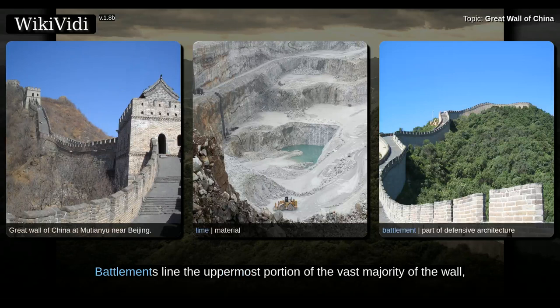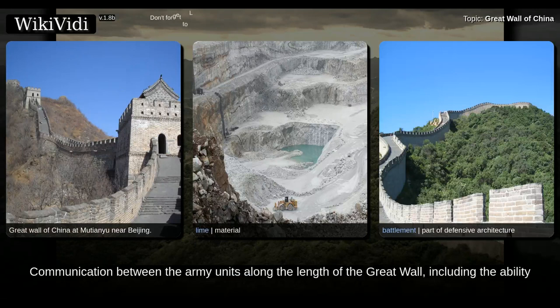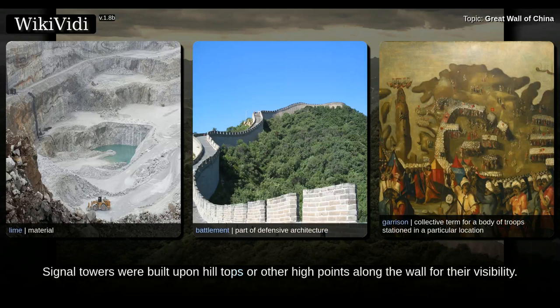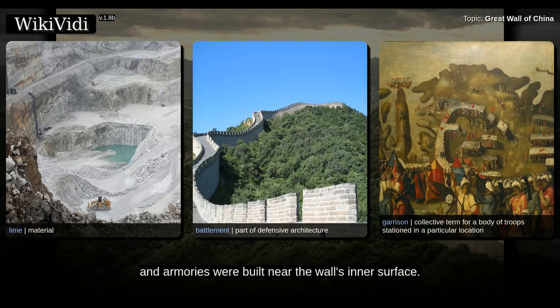Battlements line the uppermost portion of the vast majority of the wall, with defensive gaps a little over a certain height and width. From the parapets, guards could survey the surrounding land. Communication between army units along the length of the Great Wall, including the ability to call reinforcements and warn garrisons of enemy movements, was of high importance. Signal towers were built upon hilltops or other high points along the wall for their visibility. Wooden gates could be used as a trap against those going through. Barracks, stables, and armories were built near the wall's inner surface.